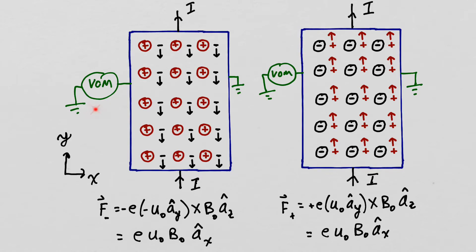So if Hall observed a positive voltmeter reading, he knew the mobile species were negative charges, and if his voltmeter had given a negative reading, he would have known the mobile charges were positive. Hall observed a positive reading on his voltmeter, so he was able to conclude that the mobile species in metals were negative charges.